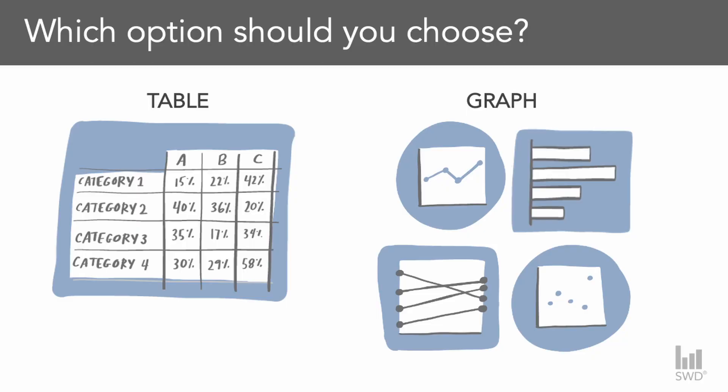There are reasons to use a table. I should define what I mean by "choose" — this is a situation where you are working with data and then you're going to share that data with someone else. This is a different use case from when you're working with your data independently and using different chart types to find interesting things about your data.